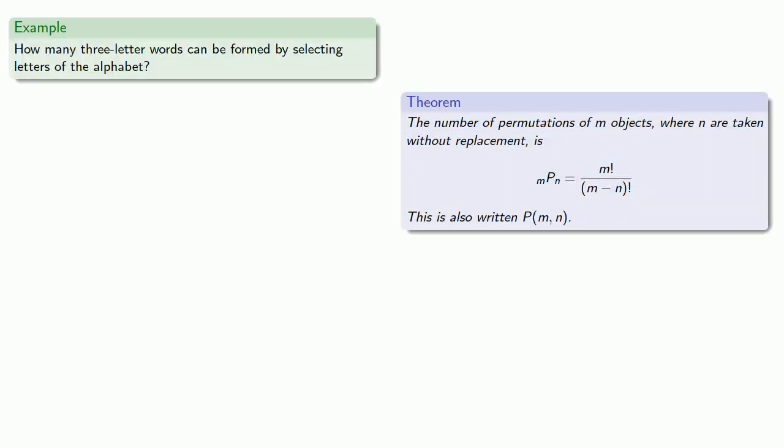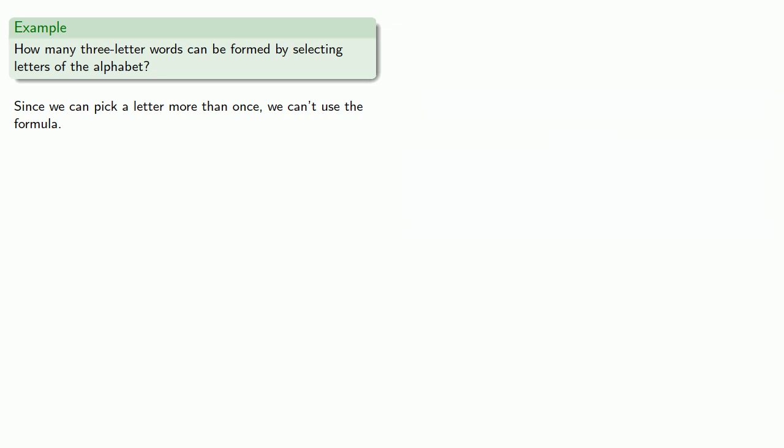So, let's check it out. How many three-letter words can be formed by selecting letters of the alphabet? Since we can pick a letter more than once, we can't use our formula, which only applies to permutations without replacement. Instead, we use the fundamental counting principle. We have our choice of first letter, second letter, and third letter. And, we have 26 choices for that first letter, 26 for the second, and 26 for the third, or a whole lot of possibilities.